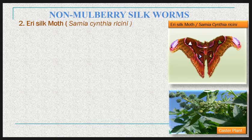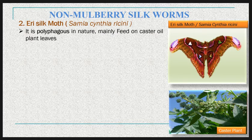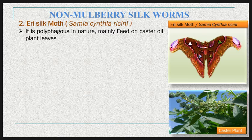Now let's discuss non-mulberry silkworms: eri, muga, and tassar silkworms. Starting with the eri silk moth — its scientific name is Samia cynthia ricini. The word 'eri' is derived from its primary food plant, the castor plant, so it is commonly called the castor silkworm. The eri silk moth is domesticated and reared on castor plant leaves. The larva of the eri silk moth is polyphagous in nature, commonly feeding on castor, wild keseru, tapioca, and bark keseru, which are its secondary food plants.